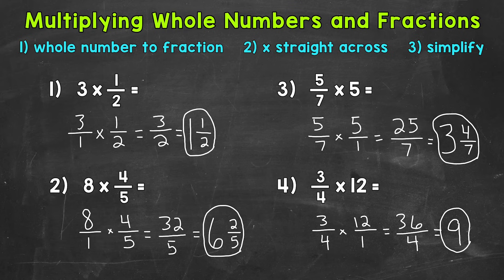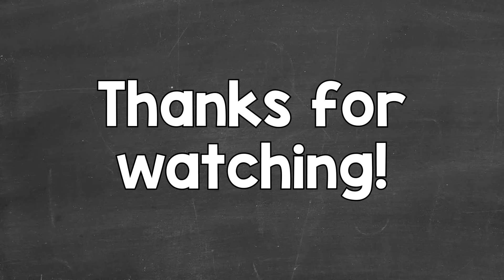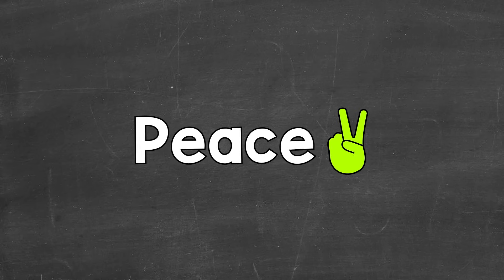So there you have it — that's how you multiply whole numbers and fractions. Make that whole number into a fraction, multiply straight across, and then simplify your answer. I hope that helped. Thanks so much for watching. Until next time, peace.